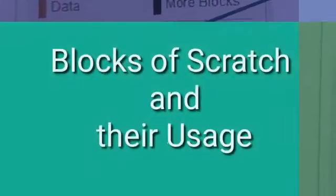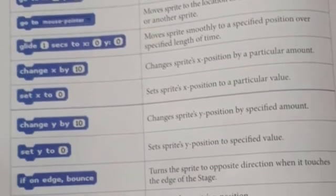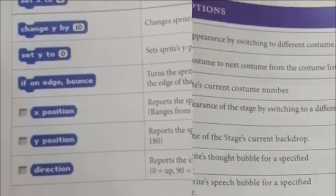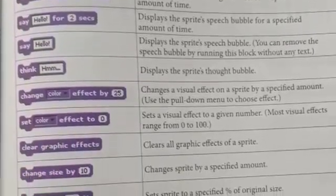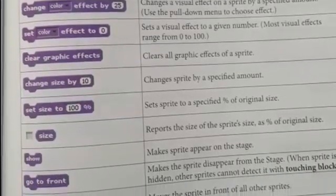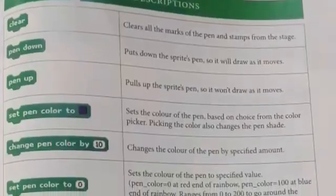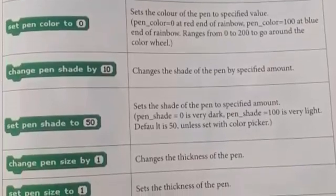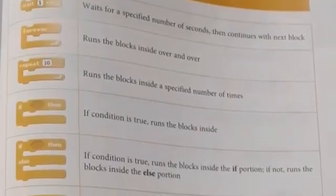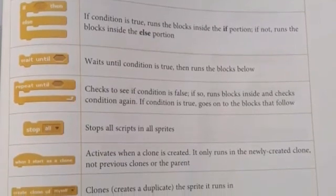Let's take a quick look at the blocks of Scratch and their uses. Motion moves the sprite in all directions including forward and backward. Looks changes the appearance for a sprite or backdrop with costumes, and makes the sprite say something using a think or say bubble. Sound plays a sound or musical note and changes the volume. The pen block makes the sprite draw as it moves, and changes color, shade, and thickness of the pen, and stamps the sprite's image on the stage. The control block lets us repeat actions and uses conditional instructions like wait, repeat, forever, and more.